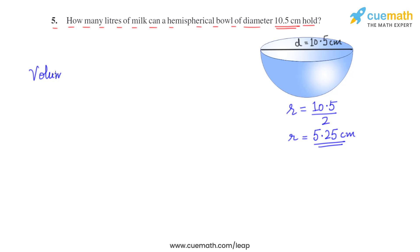Volume of hemispherical bowl, or volume of hemisphere: volume of sphere is 4 by 3 pi r cube, volume of hemisphere is 2 by 3 pi r cube, that is exactly half of it. So 2 by 3 into 22 by 7 into radius 5.25 cube. When we simplify this we will get the answer 303.1875 cubic centimeters.